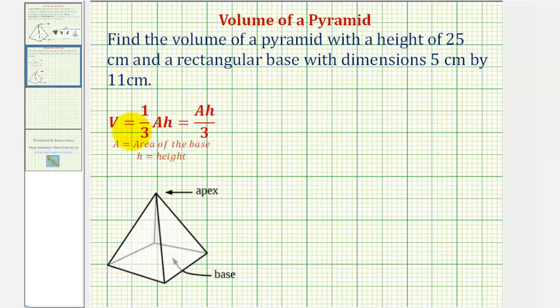The volume of a pyramid is equal to 1/3 times the area of the base times the height. Notice here in our formula, capital A represents the area of the base, and h represents the height. We can also represent the formula as area of the base times the height divided by 3. Notice dividing by 3 is equivalent to multiplying by 1/3.